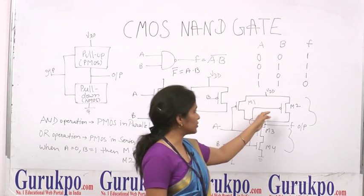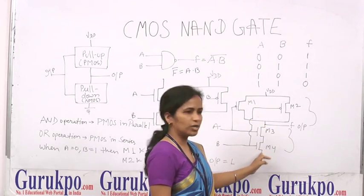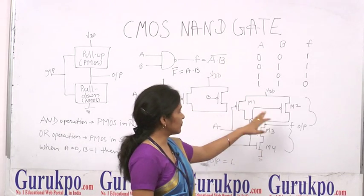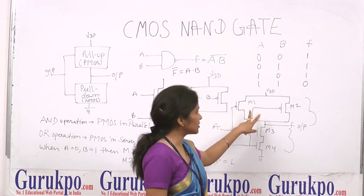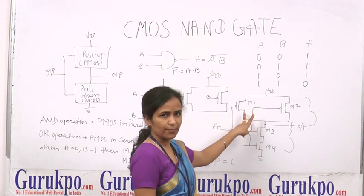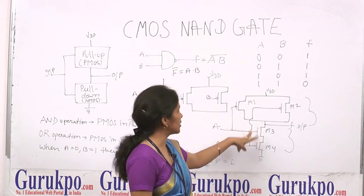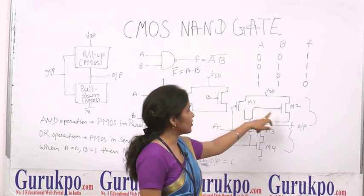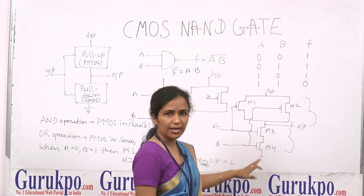We take the combination of both the pull-up and pull-down transistors. There are four transistors in total: two PMOS and two NMOS transistors, labeled M1, M2, M3, and M4.